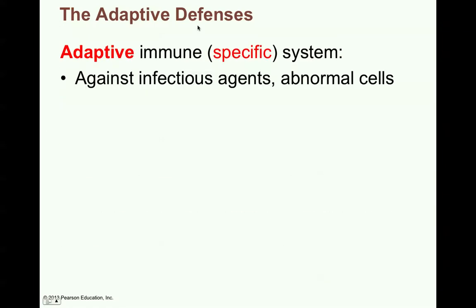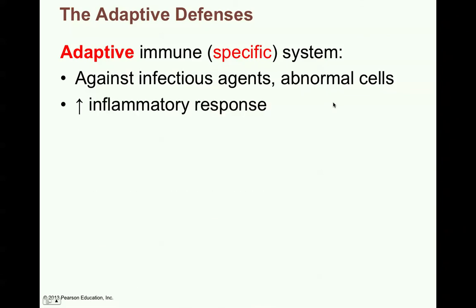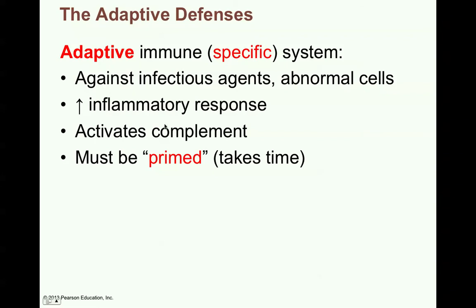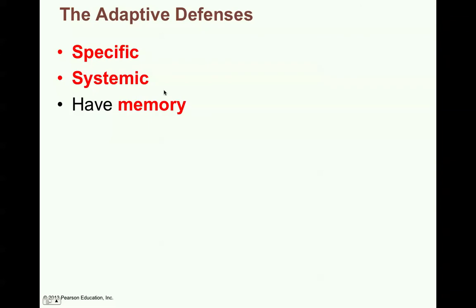Now we're on the adaptive defenses — the specific part of the immune system. The adaptive immune system is very specific against particular infectious agents or abnormal cells. You have an increased inflammatory response and it actually will activate complement. What happens is this increased inflammatory response and activation of complement is going to prime or alert the adaptive defenses. This can take some time. In the meantime, you might be sick with an infection. But the adaptive defense is very specific, systemic — meaning it happens throughout the body — and it will have a memory.